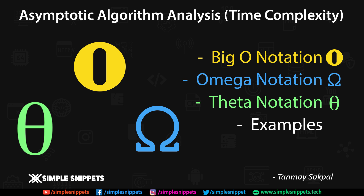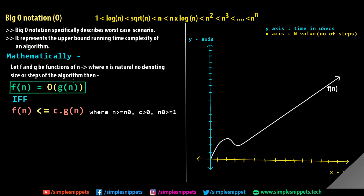Let's start with the very first type of algorithm analysis: the big O notation. Big O notation specifically describes the worst case scenario — it represents the upper bound running time complexity of an algorithm.